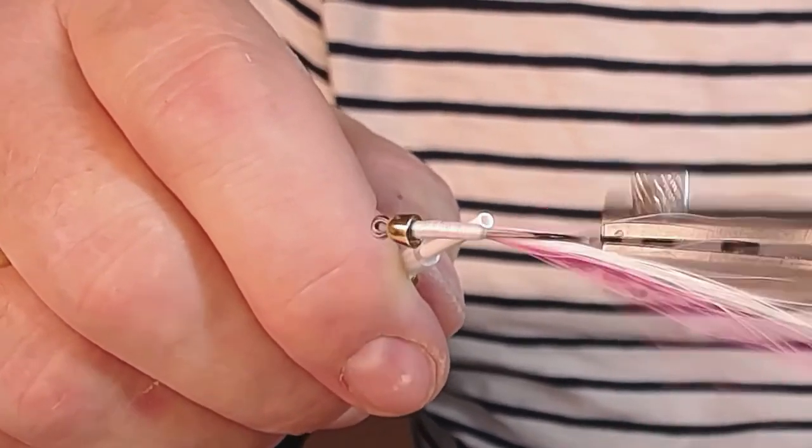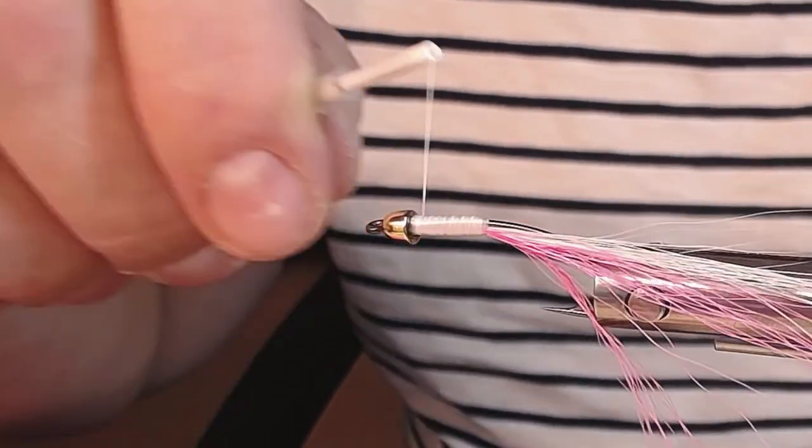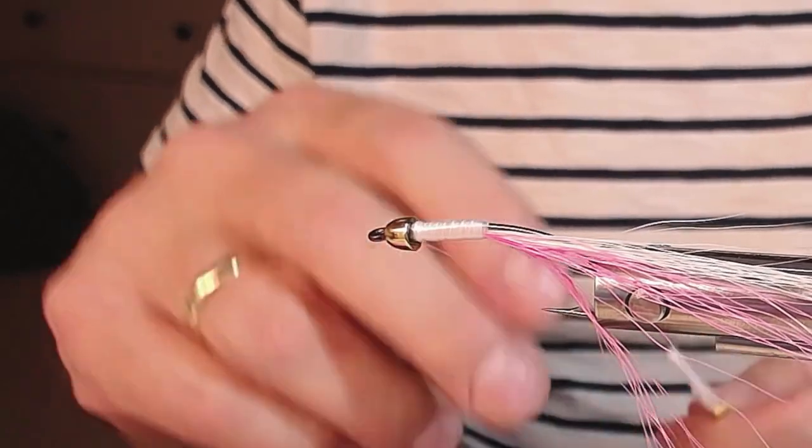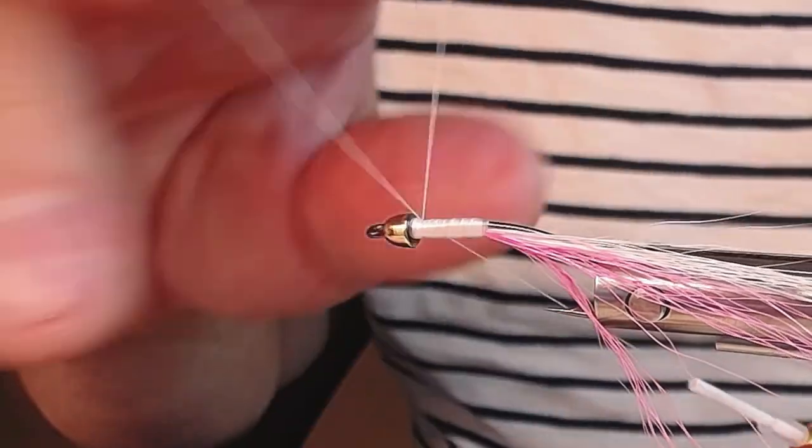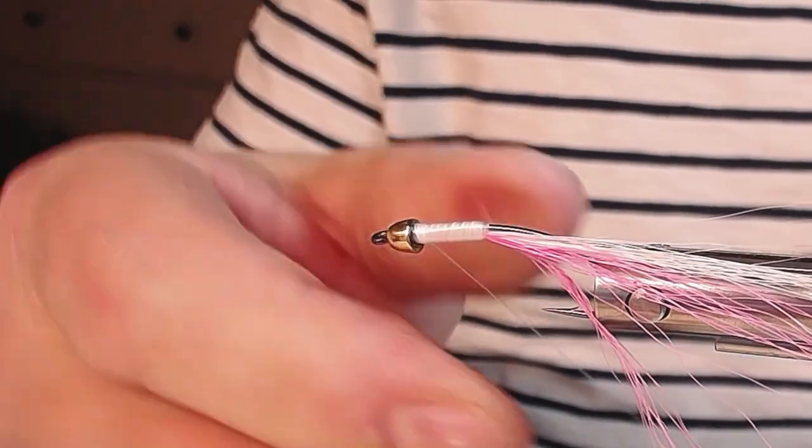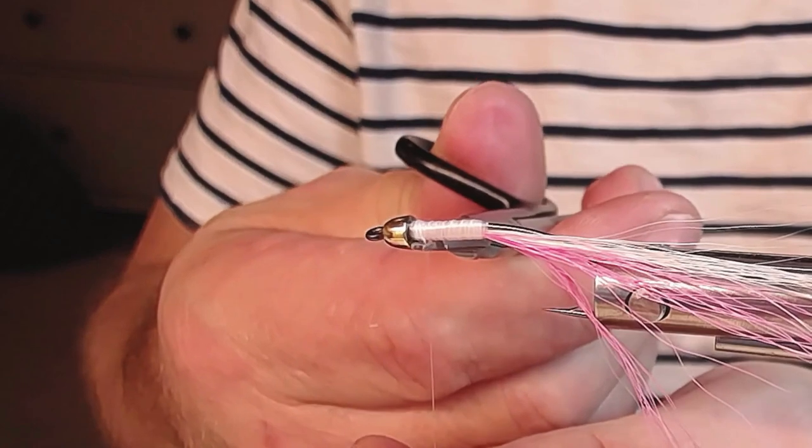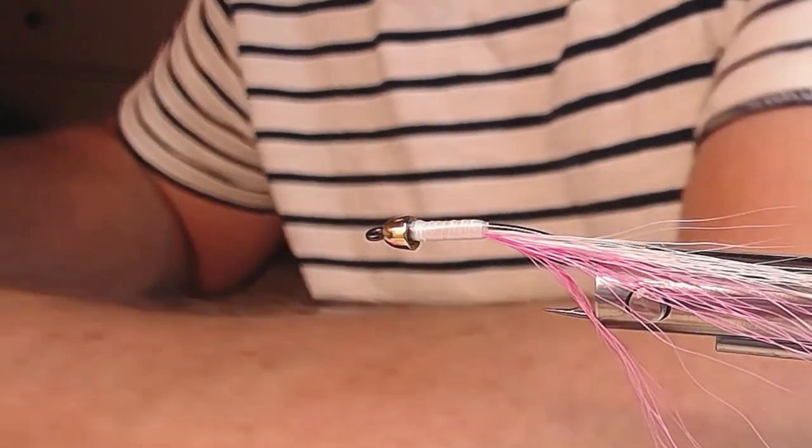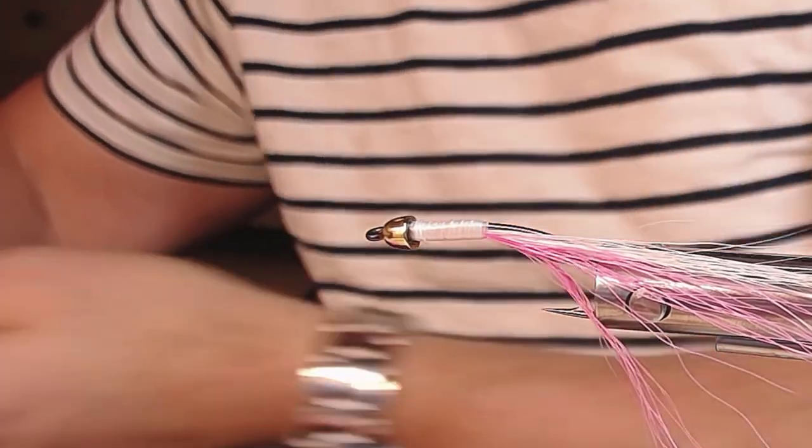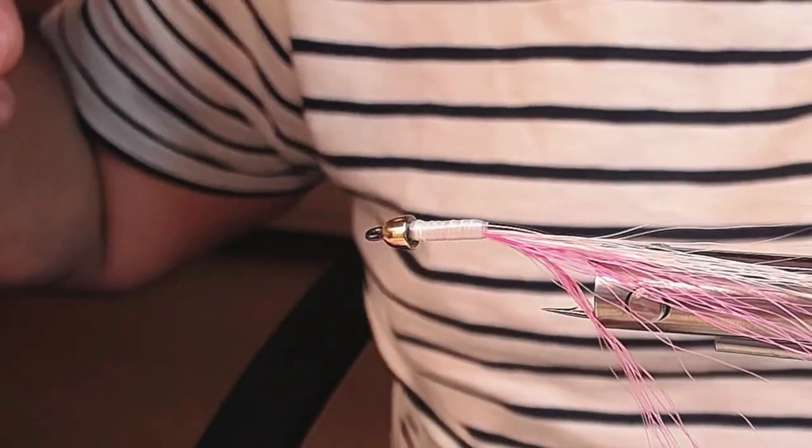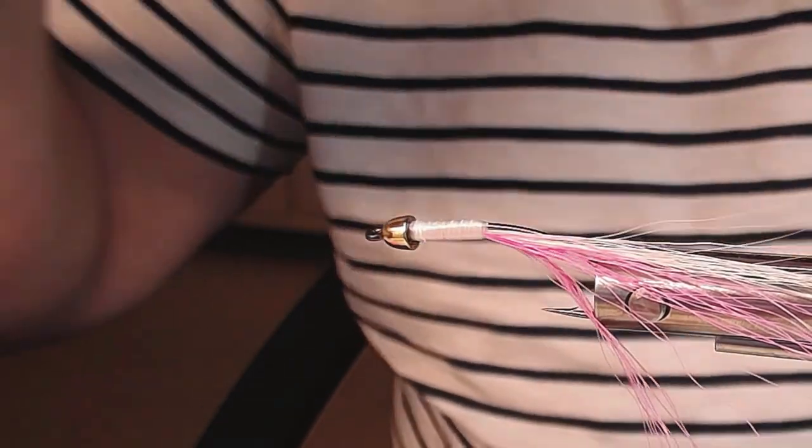I got loads of this thread so it's not very important to save some. Just make a hand whip finisher like that. It's not so important because all this is going to be covered by some lacquer. I use this kind - I got this.